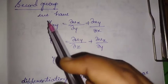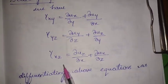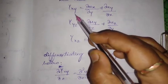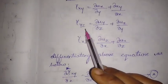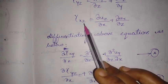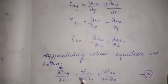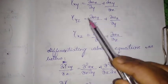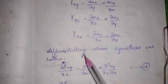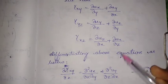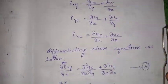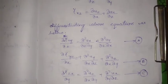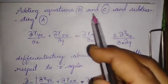Moving to the second group, we consider the formulas for gamma xy, gamma yz, and gamma xz. The first step is differentiating these equations: gamma xy is differentiated with respect to z, gamma yz is differentiated with respect to x, and gamma xz is differentiated with respect to y. For gamma xy: dou gamma xy / dou z = dou² ux / (dou z · dou y) + dou² uy / (dou z · dou x).